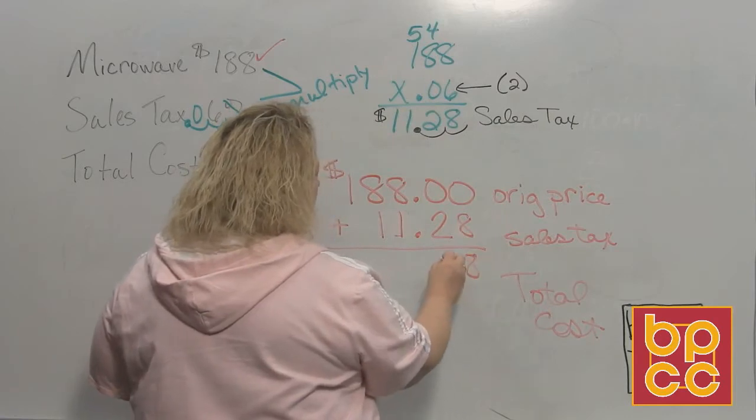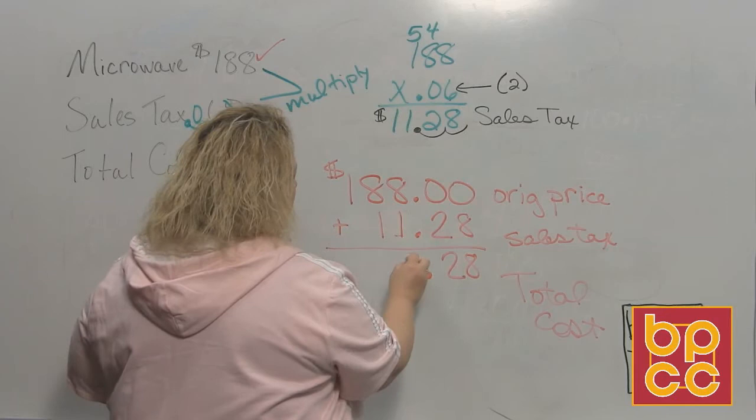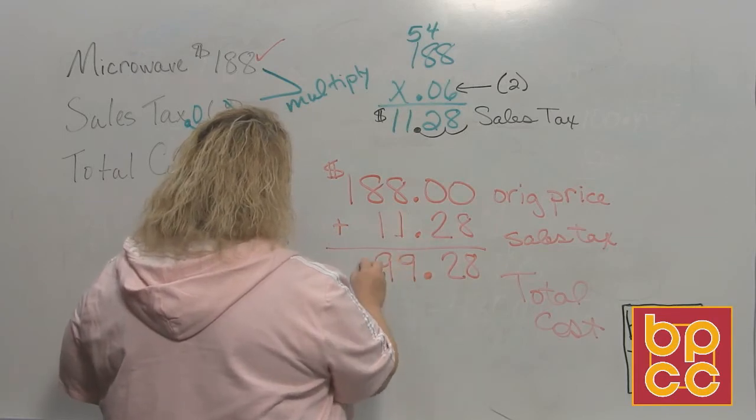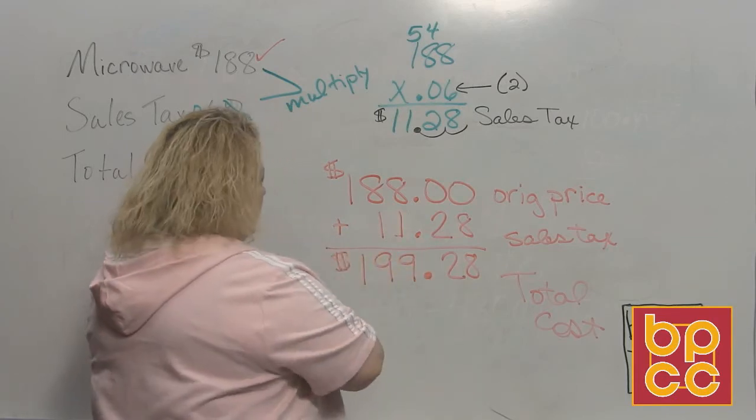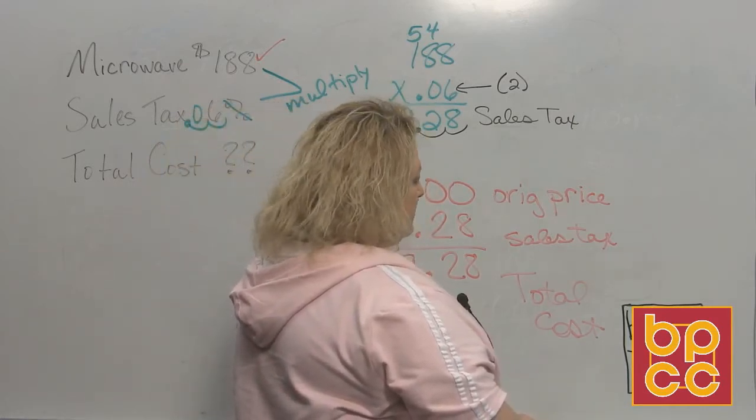And when you do that, you get your total cost. So when I add this, that would be 8 and 2. Remember, when you add decimals, you line them up. That would be a 9 and a 9 and a 1. So your total cost for the microwave will be $199.28.